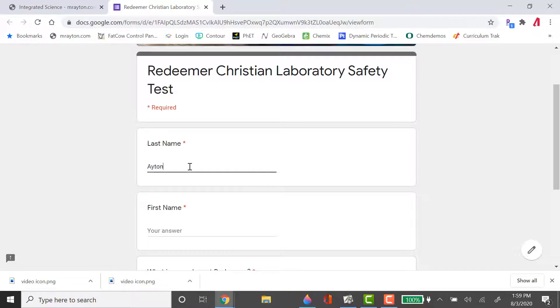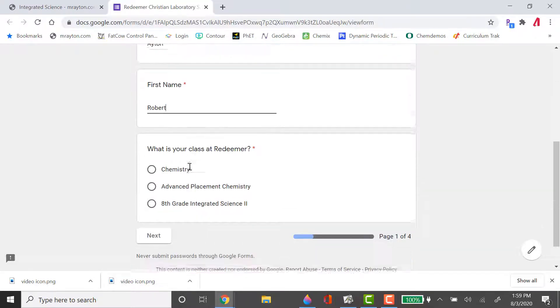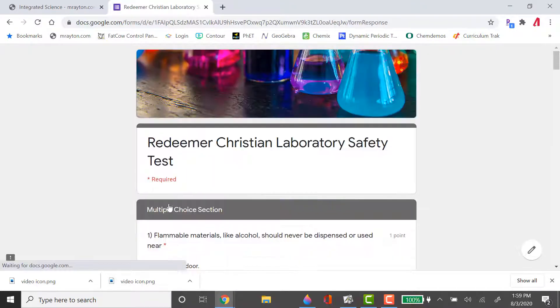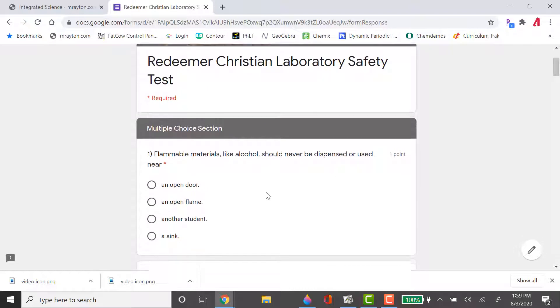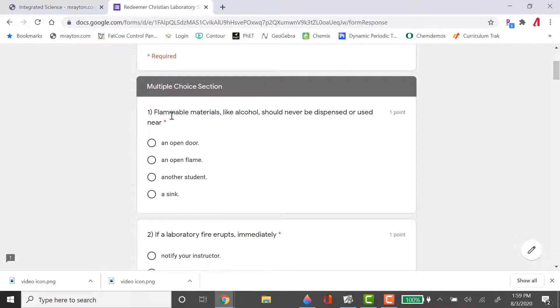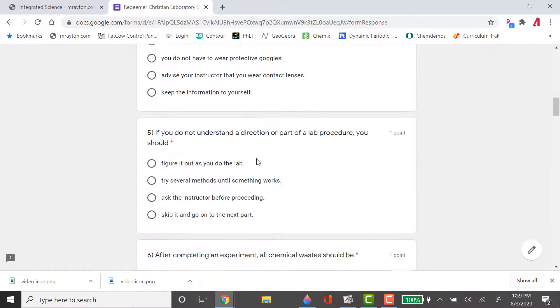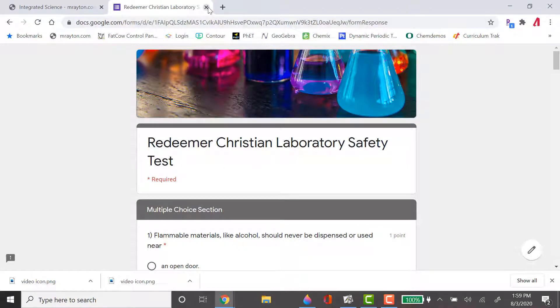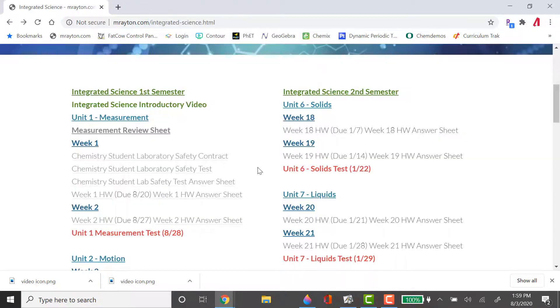Where you're going to put in your answer to that safety test is right where it says Chemistry Student Lab Safety Test Answer Sheet. So you click on that, and you can see it says Redeemer Christian Laboratory Safety Test. You're going to put in your last name, your first name, and then what class? Your 8th grade Integrated Science 2. And so we click Next, and you can see there's going to be the test right here. Question number one, flammable materials like alcohol should never be dispensed or used near what? An open flame. Alcohol is going to set on fire. And so you're going to go through, and you're going to click all of your answers for the laboratory safety test. And you're going to get a grade.